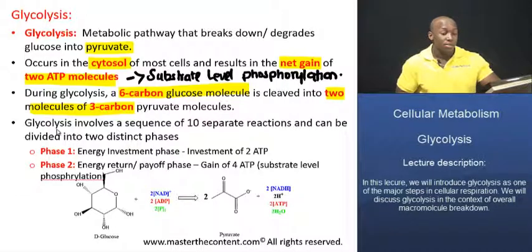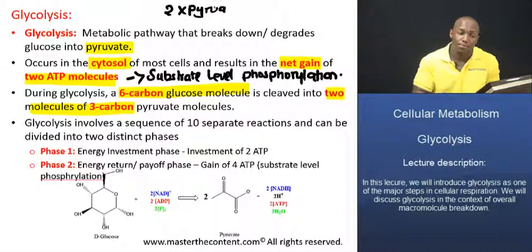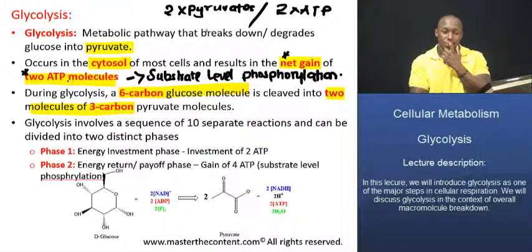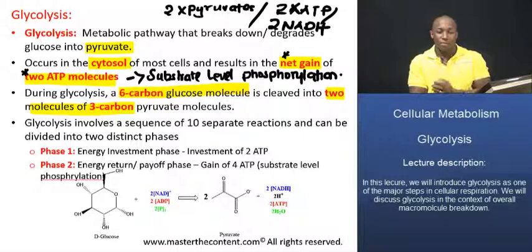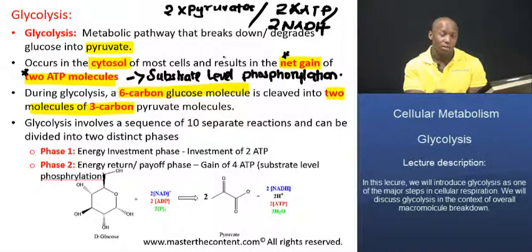For each molecule of glucose that goes through glycolysis, a number of things are produced. We produce two pyruvates, we also produce two ATP molecules — a net gain of two ATP molecules via substrate-level phosphorylation — and we also produce 2 NADH, that powerful reducing agent. Those are the main products of this process. It's important to commit those to memory, as many questions are centered around knowing these key products.